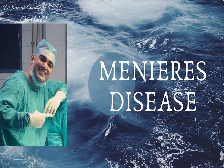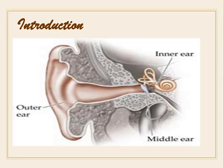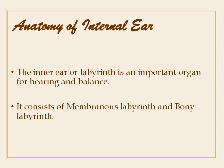Today's topic is Meniere's disease. As an introduction, this is a diagram of the ear showing the outer, middle, and inner ear. The inner ear, or labyrinth, is an important organ of hearing and balance. It consists of the membranous labyrinth and the bony labyrinth.